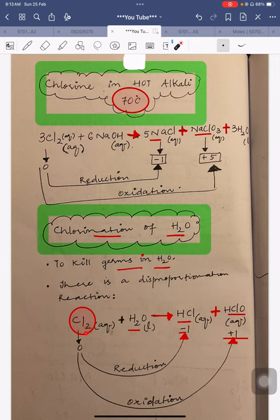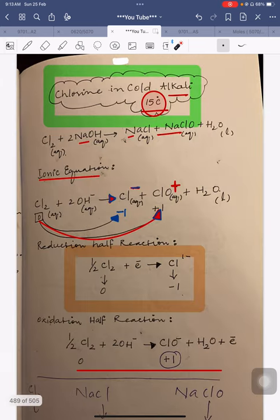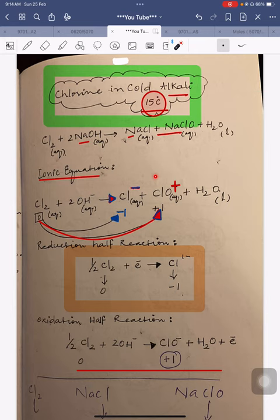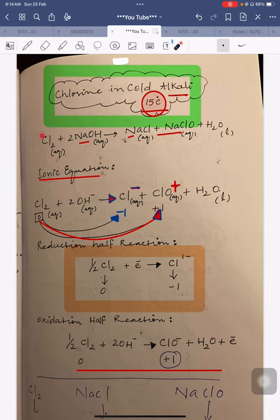Cl₂ started at an oxidation state of 0. When reacting with cold NaOH, it makes NaCl (Cl = -1) and NaClO (Cl = +1). With hotter alkali it makes NaCl and NaClO₃; with colder alkali it makes NaCl and NaClO. You need to keep the balanced chemical equations for both cases in mind. The Na is removed in the ionic equation because it is a spectator ion.